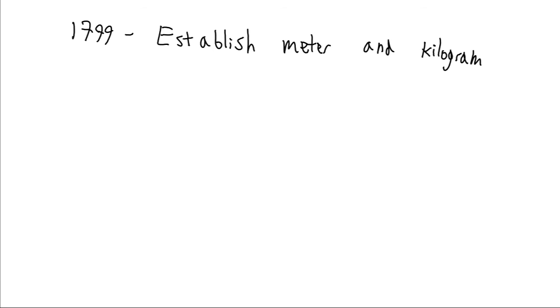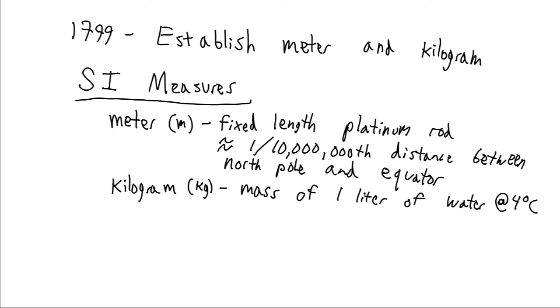In 1799, Méchain and Delambre return, and the Royal Society throws a big party and they establish the meter and the kilogram as standard units of measurement. The meter is represented by a fixed length platinum rod equal to the size that Méchain and Delambre have calculated based on their measurements is one ten-millionth of distance between the north pole and the equator. And copies of this rod are made and distributed to other nations, so scientists in those nations can compare and everyone can agree on the size of the meter.